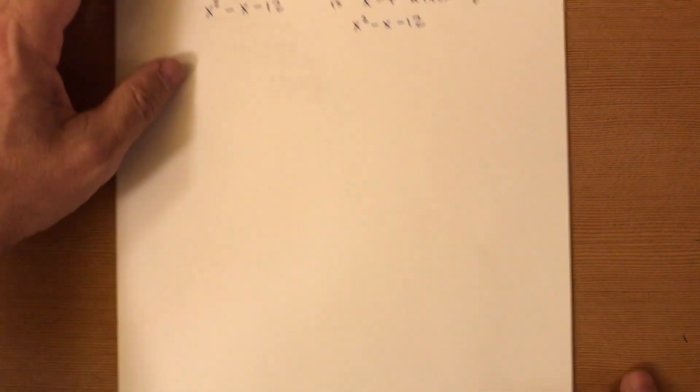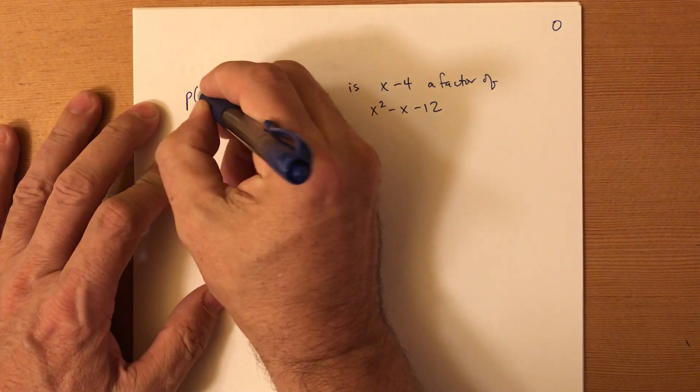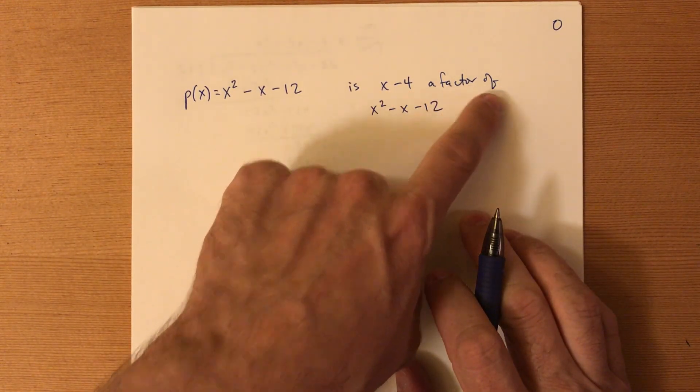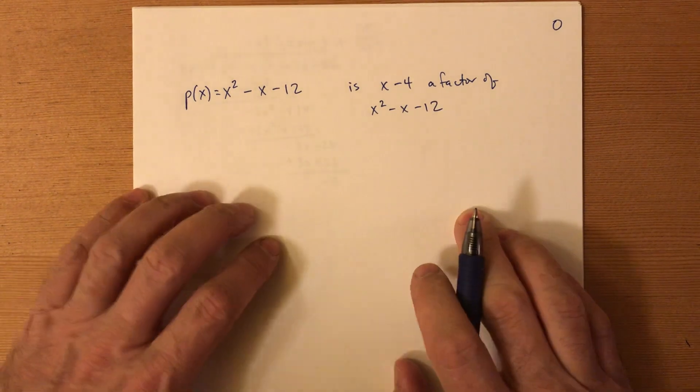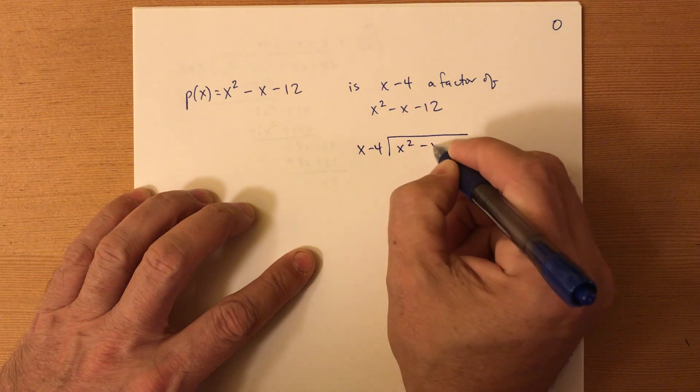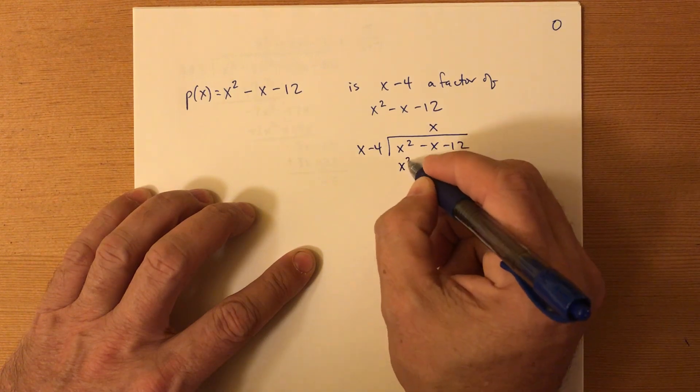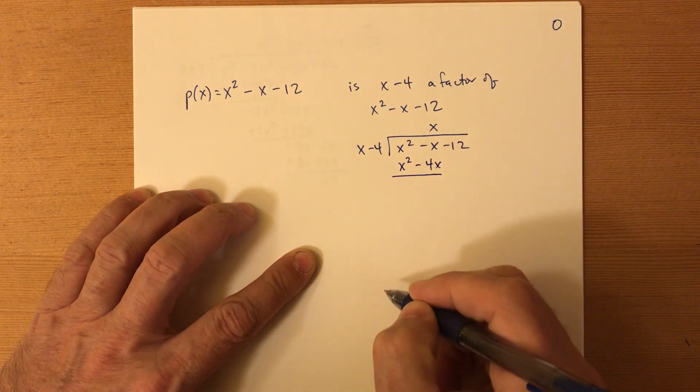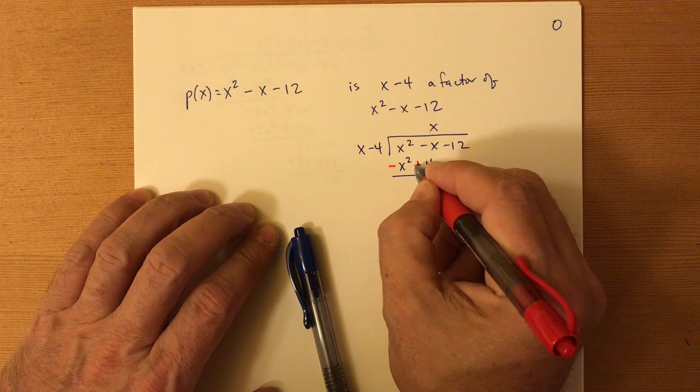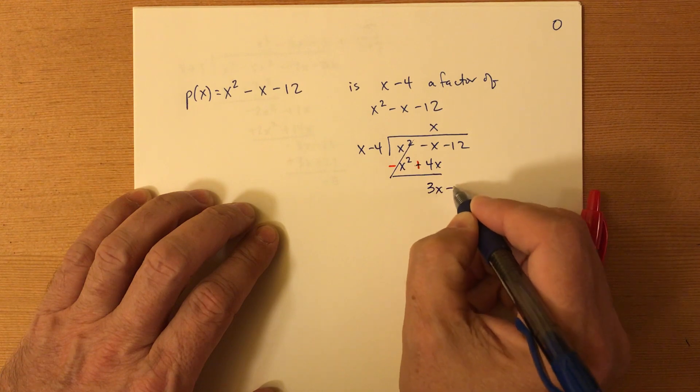So first, let's just take a quick minute to ask you this question. If I gave you this polynomial, let's say P of x equals x squared minus x minus 12, and I asked you is x minus four a factor of that. Some of you would actually do this, you would say x minus four, let's divide that in there, x squared minus x minus 12. And remember, we did this in class the other day. So minus four x there. And you would go ahead and remember, you got to change the signs because you're subtracting.